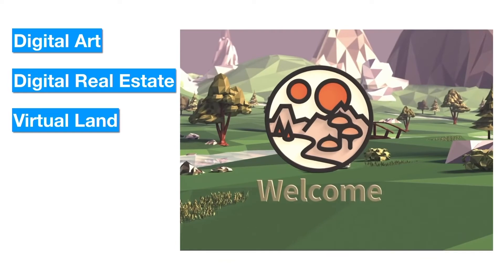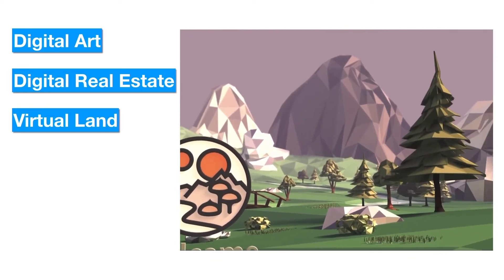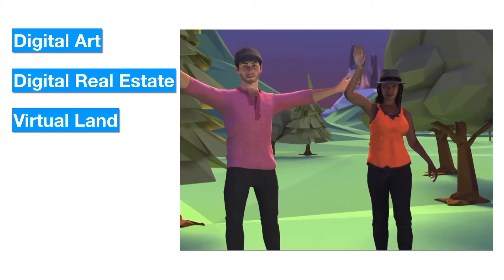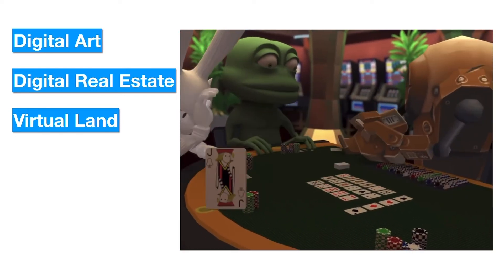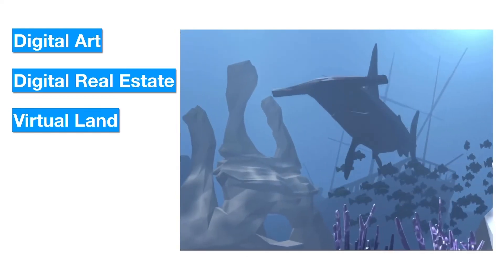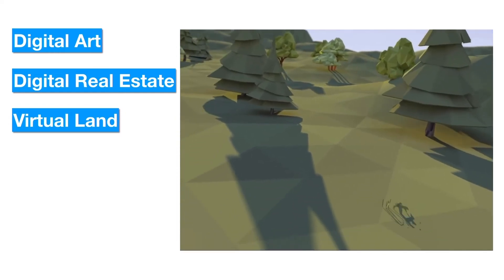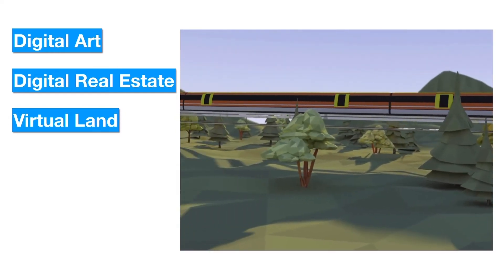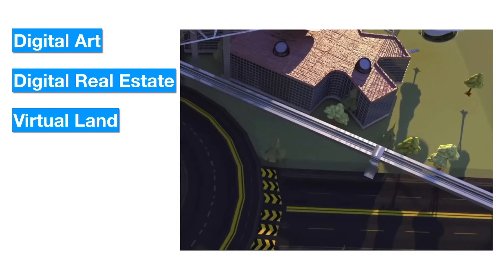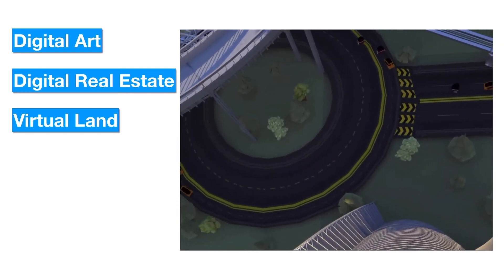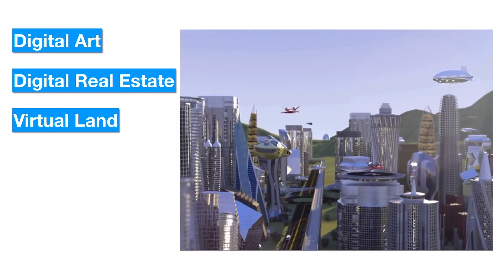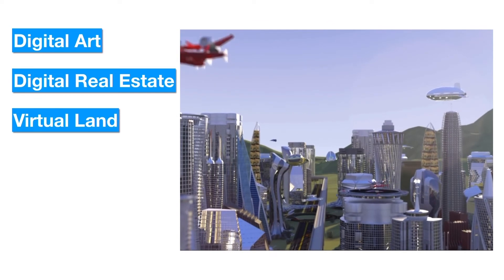Virtual land — not to be confused with digital real estate — refers to plots or parcels in virtual reality worlds such as Decentraland and Sandbox, which can be bought and developed by consumers. Buyers can create assets like virtual homes, hotels, casinos, schools, universities, theaters, stadiums, and amusement parks. Recently, the sale of a parcel of virtual land in Decentraland raised bids of millions of dollars.